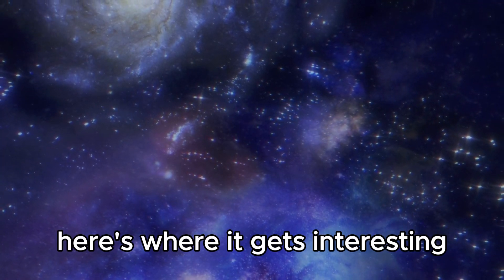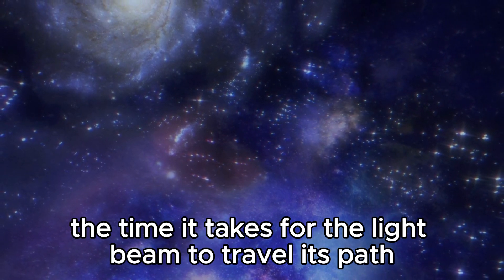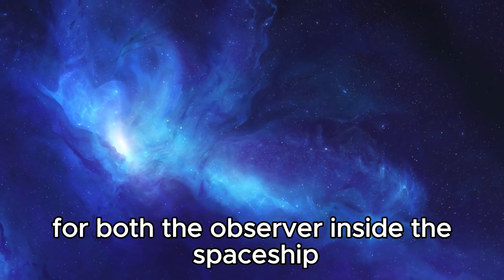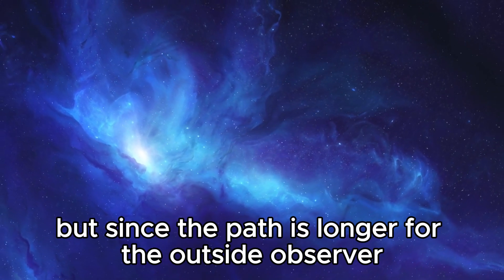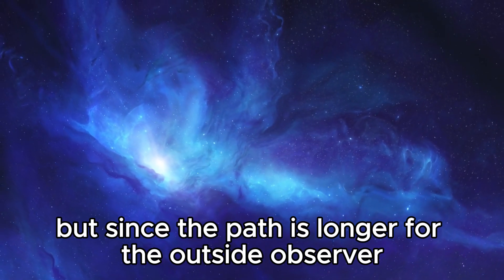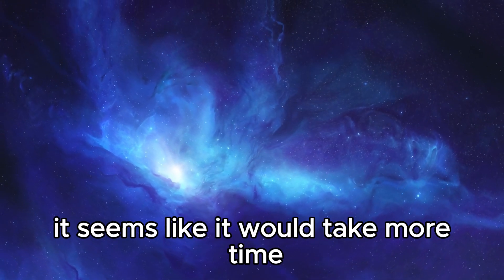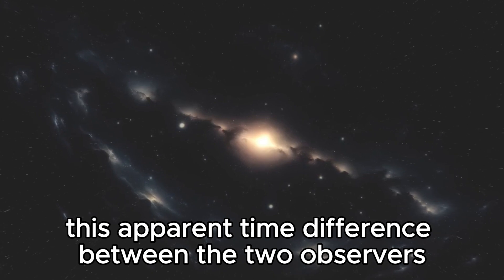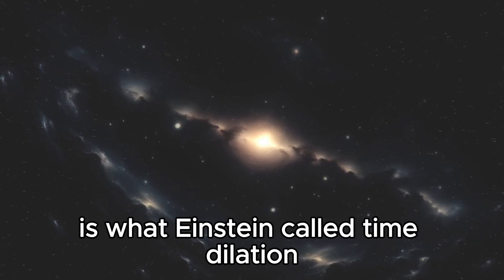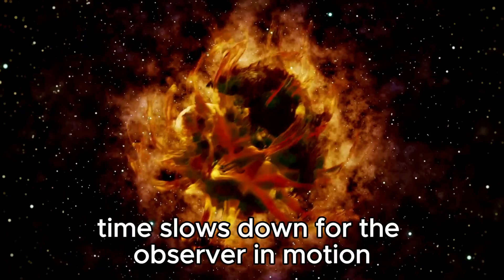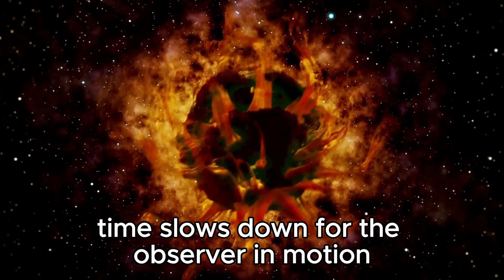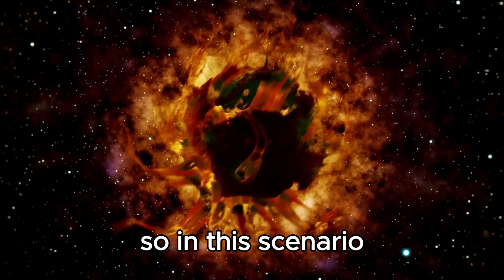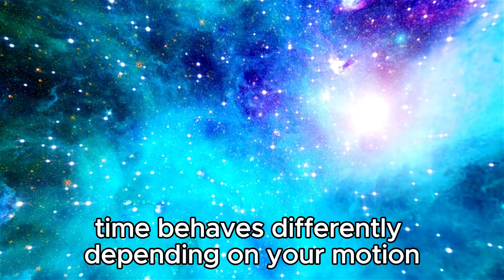Now, here's where it gets interesting. The time it takes for the light beam to travel its path should be the same for both the observer inside the spaceship and the one outside. But since the path is longer for the outside observer, it seems like it would take more time for the light to complete its journey. This apparent time difference between the two observers is what Einstein called time dilation. Time slows down for the observer in motion relative to the stationary observer. So, in this scenario, time behaves differently depending on your motion.